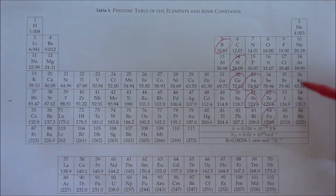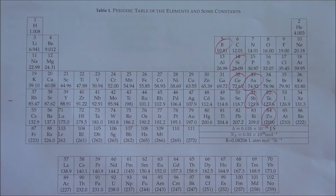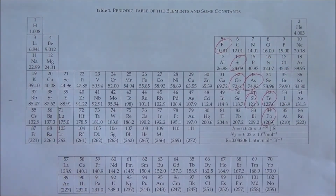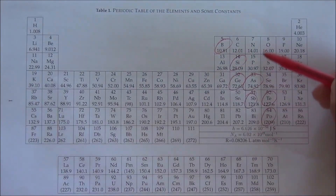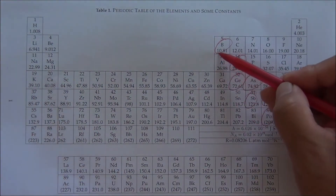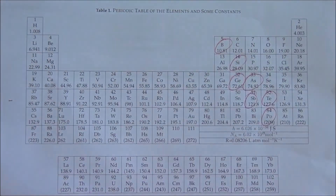This group is called halogens. They will form negative one simple anions. This group is called chalcogens. They will form negative two simple anions. The next group will form negative three simple anions, and another group will form plus three simple cations.